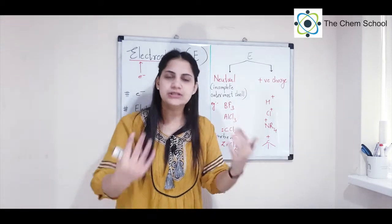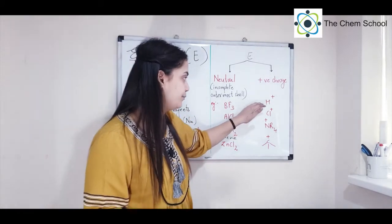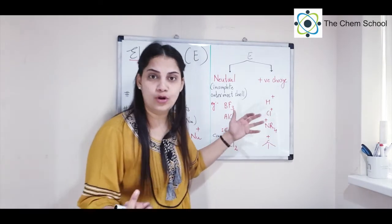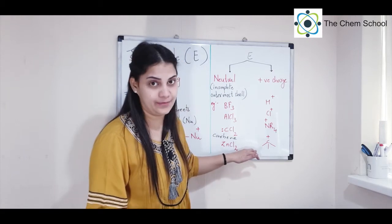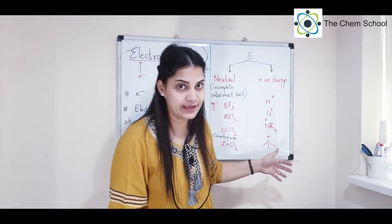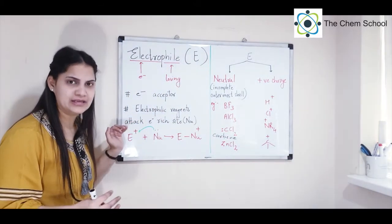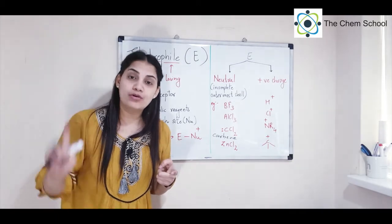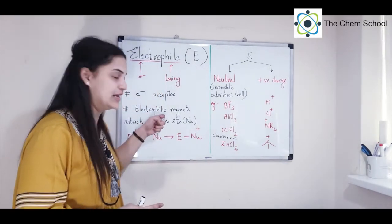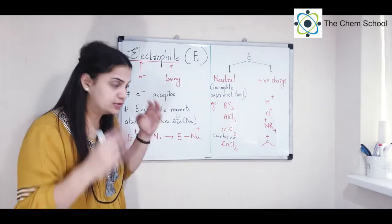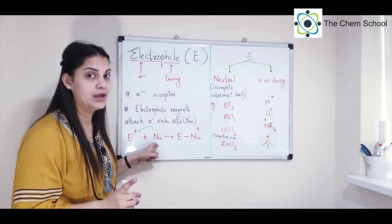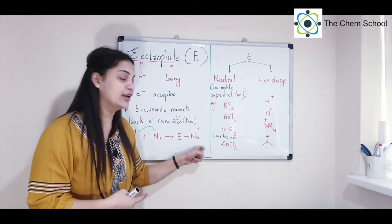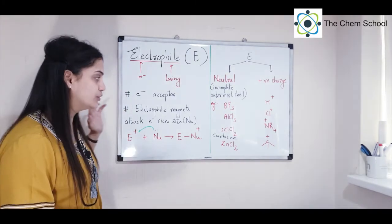Positively charged species are strong electrophiles because they clearly need more electrons. Examples include H⁺ (proton), Cl⁺ (chloronium ion), NR₄⁺ (ammonium ion), and carbocations (carbonium ions). In organic chemistry, the arrow always starts from the electron-rich side (the nucleophile) and points to the electron-deficient side. The arrow will never start from the electrophile — it starts from the nucleophile, and the electrons get donated to the electrophilic reagent, forming a new bond.